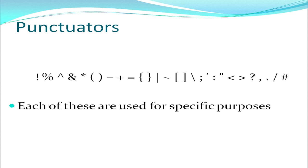Next we move on to punctuators. Various special characters that you have on the keyboard are punctuators. Each character has got a specific purpose and you have to use it according to that purpose. For example, round brackets cannot be used in place of curly brackets and vice versa — although they are both brackets, they are used for specific purposes.